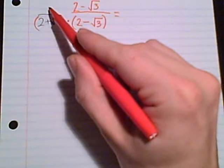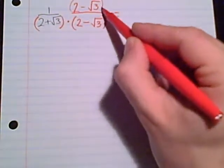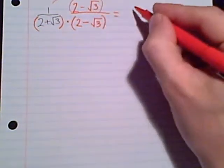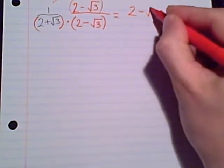Now, in the numerator, we have one term by two terms, so that would need to be a distribute, but we're multiplying by 1, so it stays 2 minus radical 3.